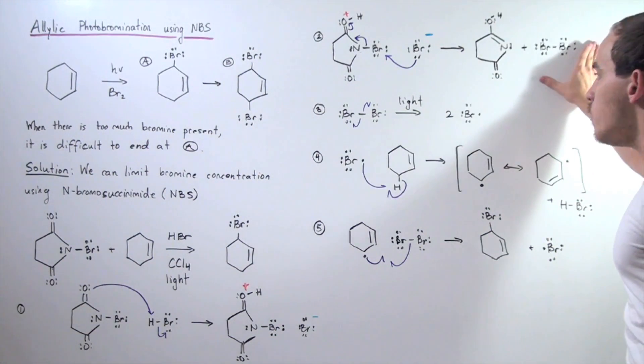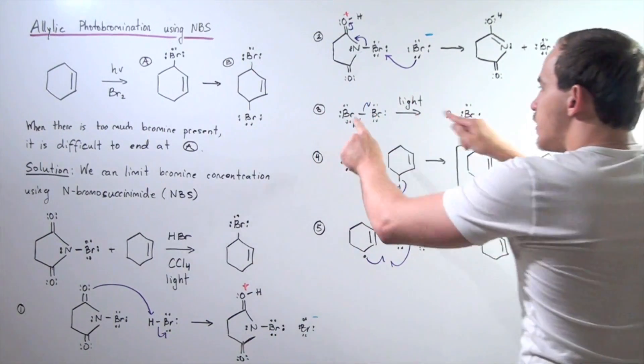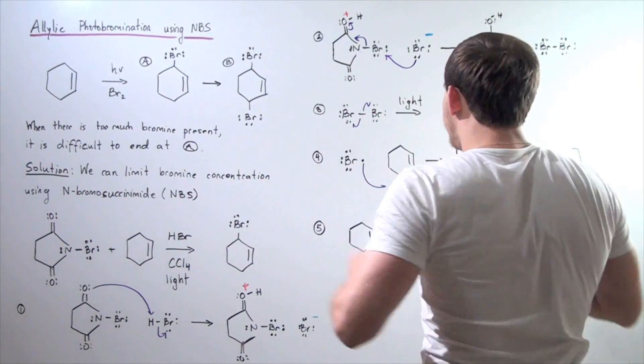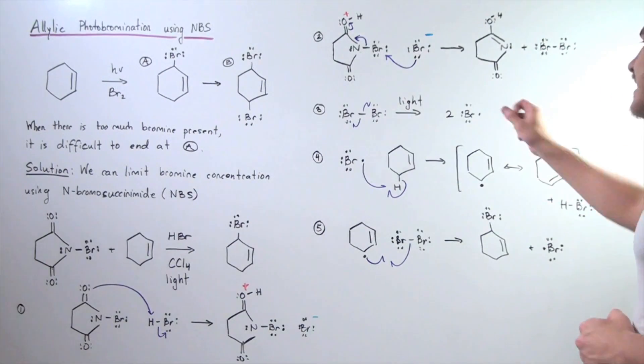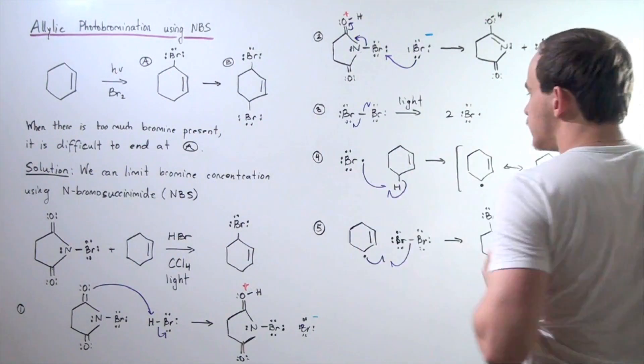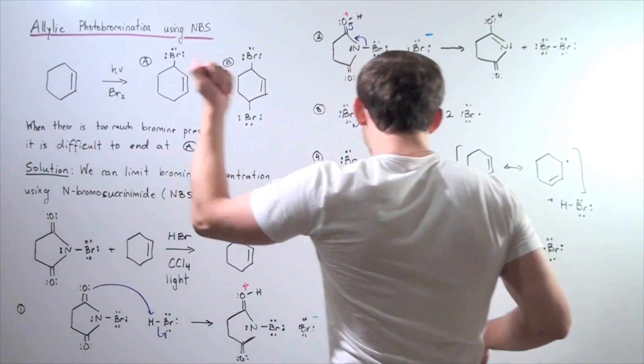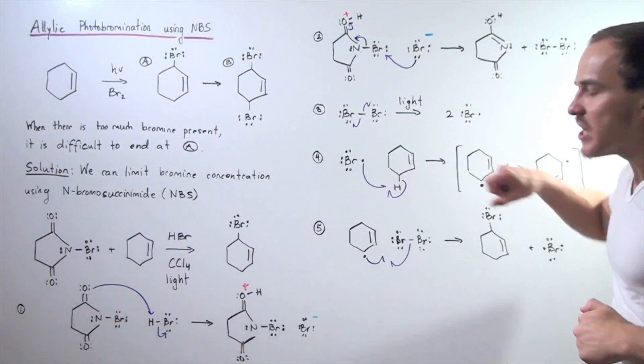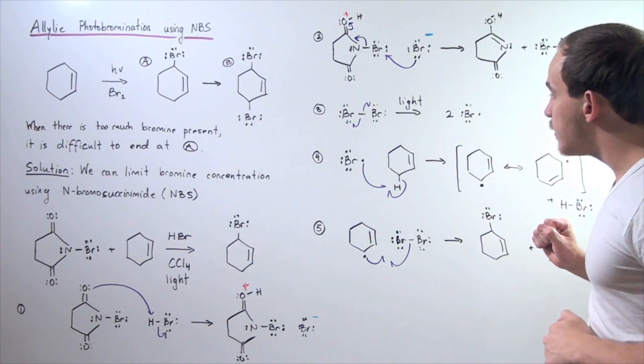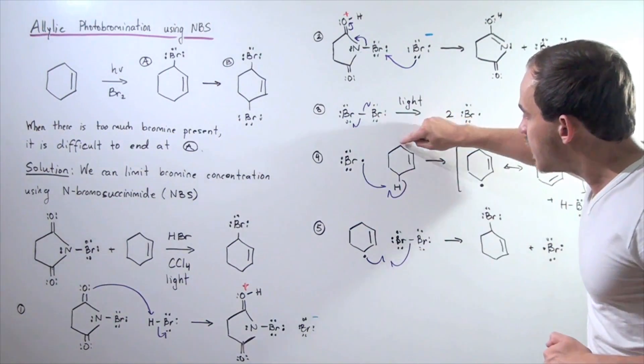And now, this bromine, in the presence of light, dissociates. The two electrons move apart, forming two chain-carrying radicals. And now, one of these chain-carrying radicals interacts with our initial starting material, taking away this H atom. Why this H atom and not any other H atom?